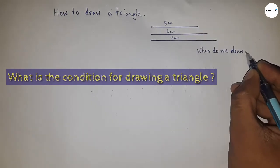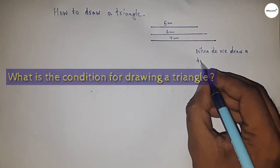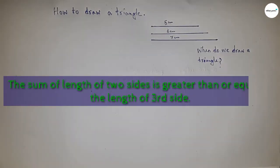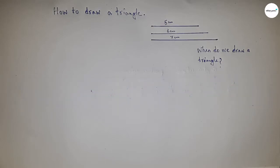What is the condition for drawing a triangle? The condition is that the sum of the lengths of two sides must be greater than or equal to the length of the third side. Now I'm going to check whether this is satisfied.